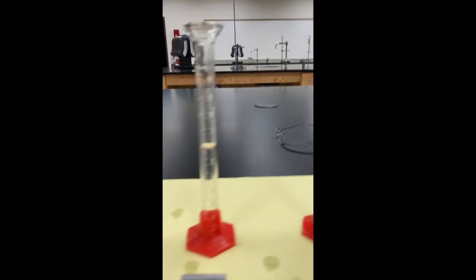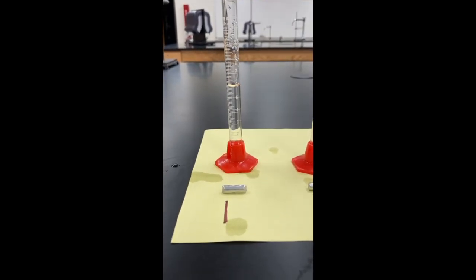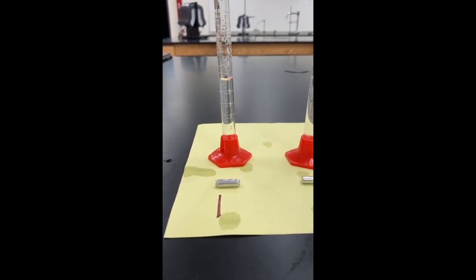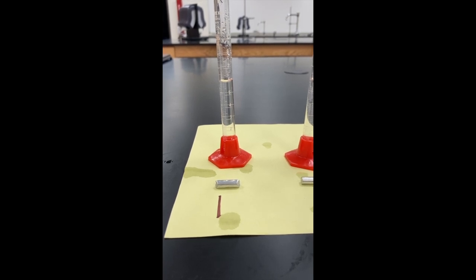So we're going to start off with six milliliters in our graduated cylinder, and what I want you to do is in your data table right now, write in 6.0 milliliters as your starting volume for each piece.